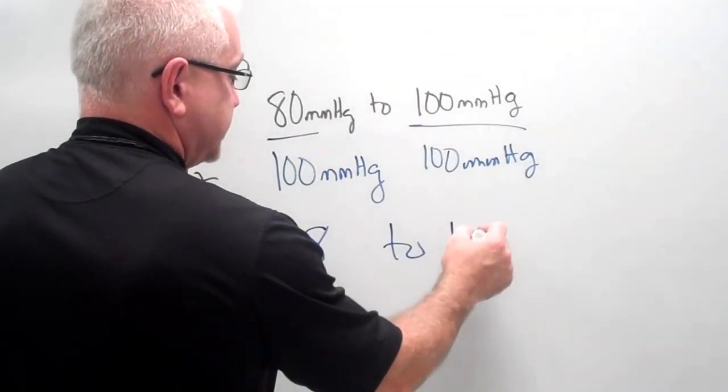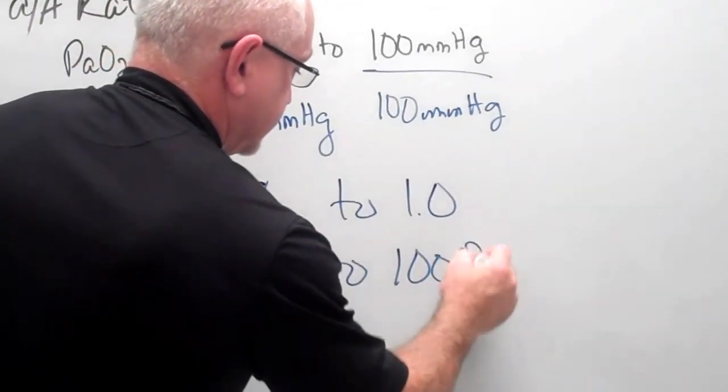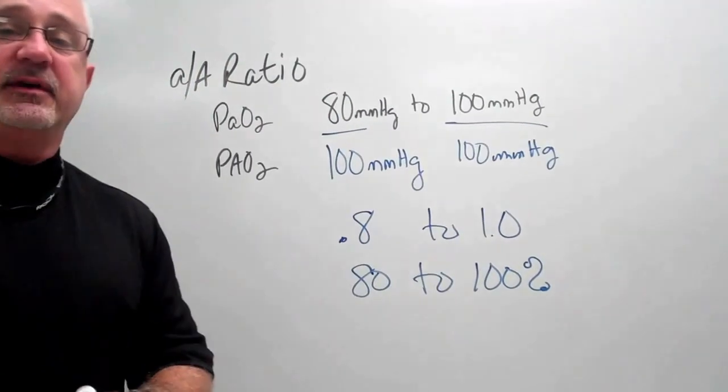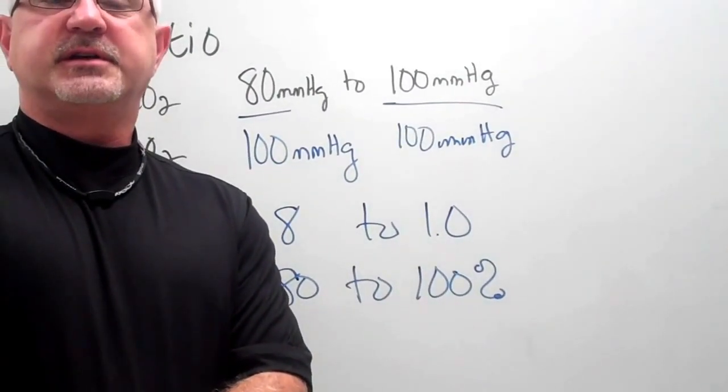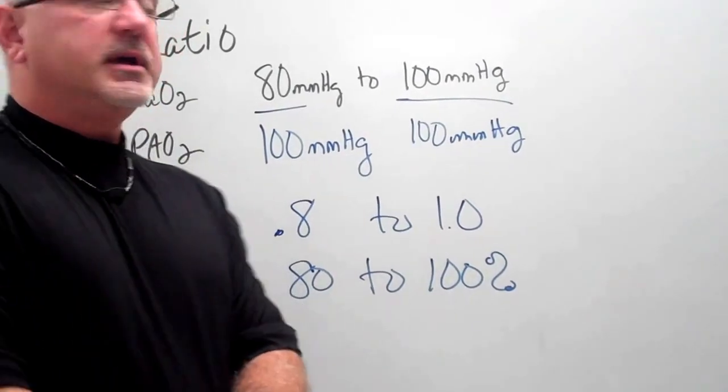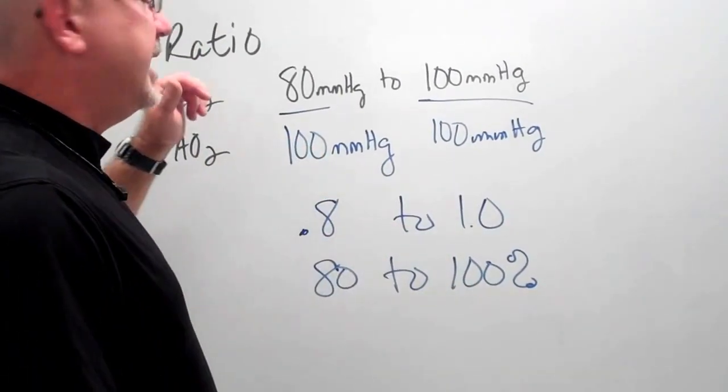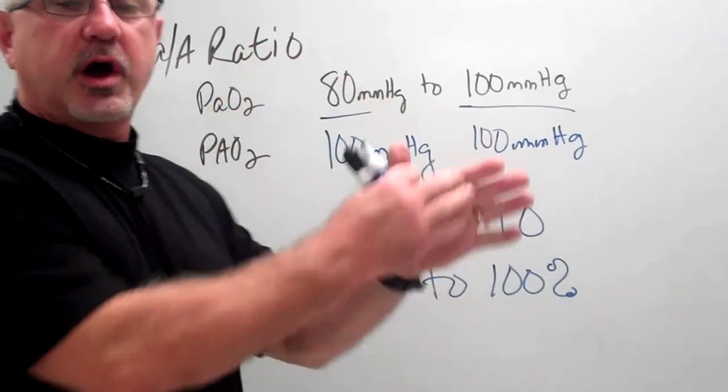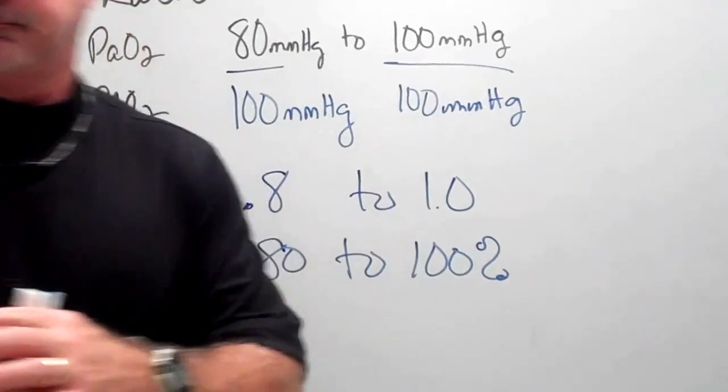So if this patient is having normal alveolar to arterial gas exchange, 80 to 100% of the oxygen that's available at the alveolar level will cross the AC membrane and get into the arterial blood.